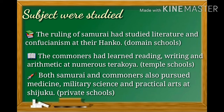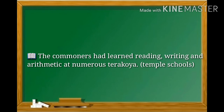The commoners had learned reading, writing, and arithmetic at numerous Terakoya, the temple schools. Both samurai and commoners also pursued medicine, military science, and practical arts at Shijuku, the private schools.